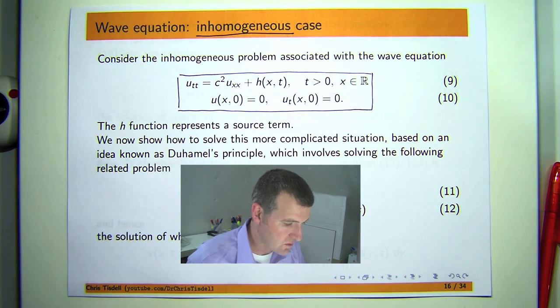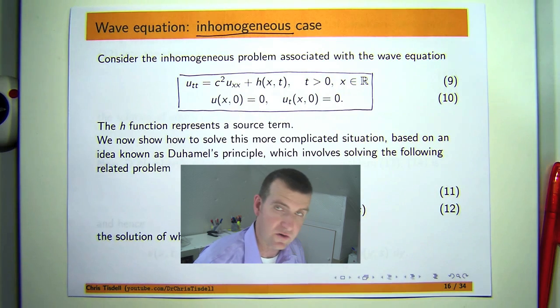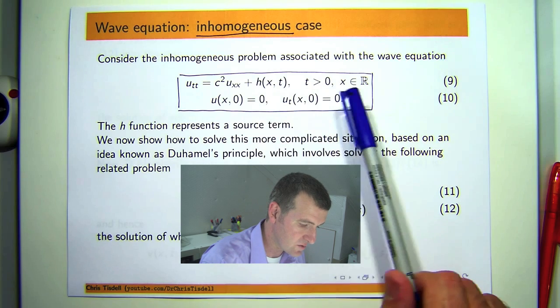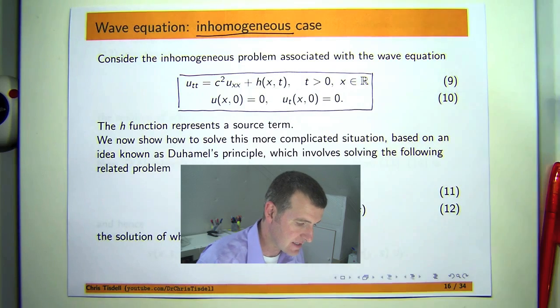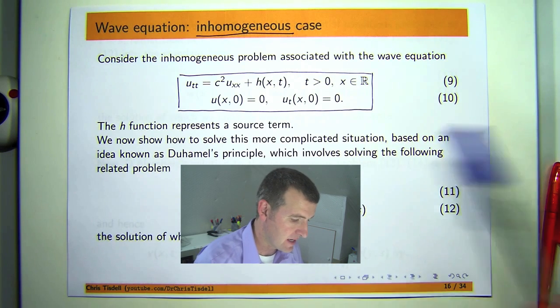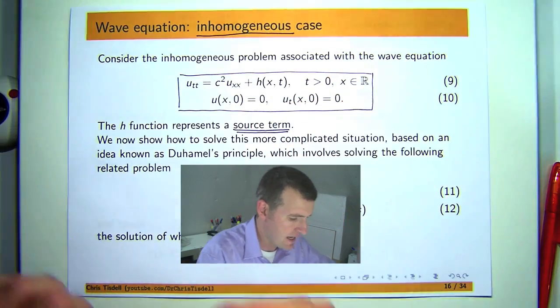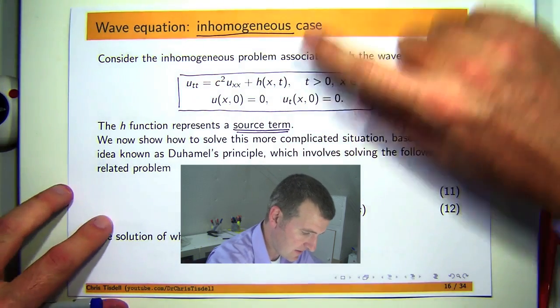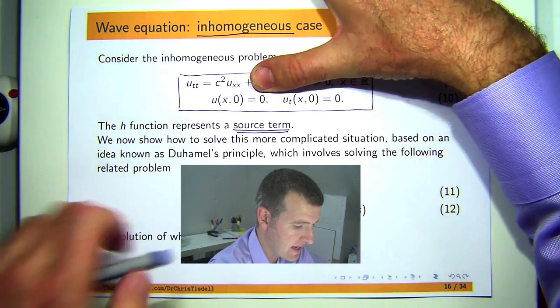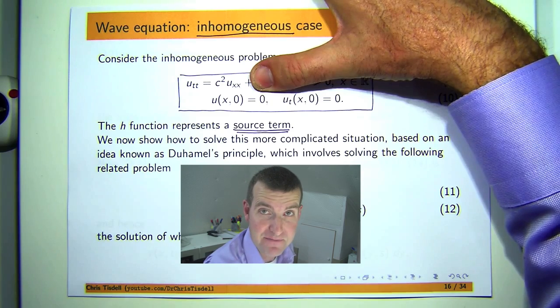And I'll show you how an idea called Duhamel's Principle leads to a solution to this problem. Now a couple of things to note before we start. C is just a constant. Here we've got zero initial displacement and zero initial velocity. And H is the inhomogeneous or non-homogeneous term. So H is sometimes called a source term and it's inputting a movement or vibrations or displacement into our system. So in previous videos we've looked at the case when H is zero and these conditions are non-zero, and we formed a solution known as D'Alembert's solution.